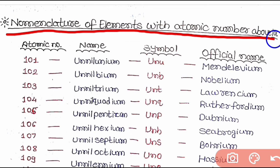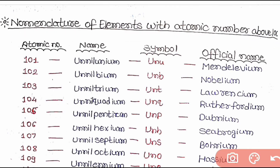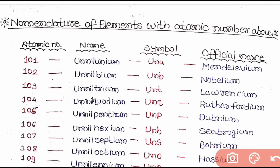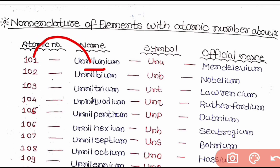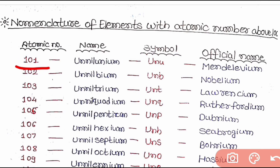Digit 9 — en (e). Now let us come to the nomenclature of elements with atomic number above 100. If the atomic number is 101, its name will be Unnilunium. We know that 'un' stands for 1, 'nil' stands for 0, and again 'un' stands for 1, and at last the suffix '-ium' is used. So 101 is named Unnilunium.